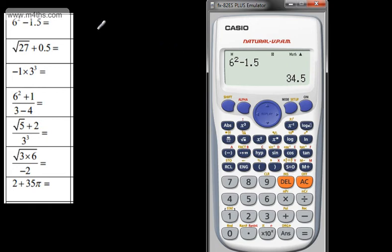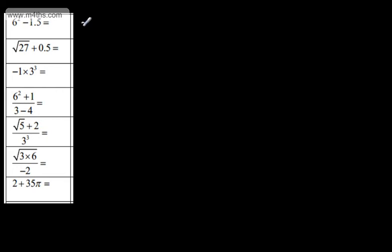Often with these questions we're asked to write our full calculator display. In this particular case we've got quite a nice number, but if we've got a long number and you're asked to write the full display you just write it down. Often those questions then require you to round the answer to one or two decimal places. This is going to be 34.5.